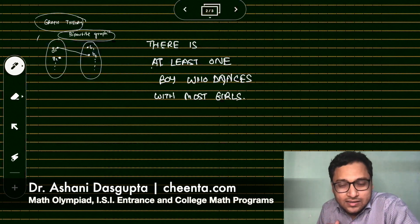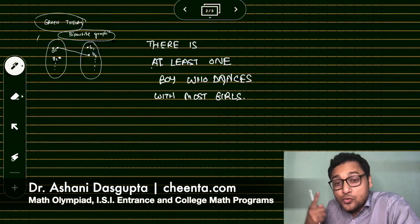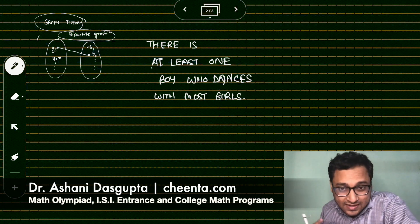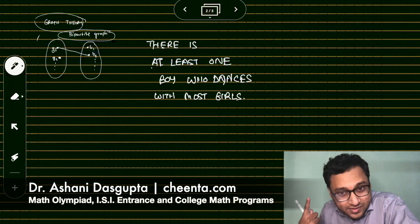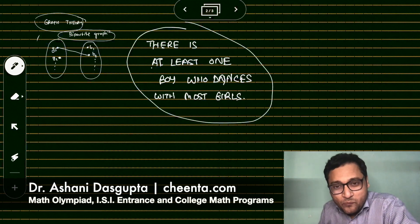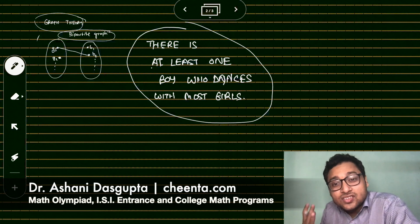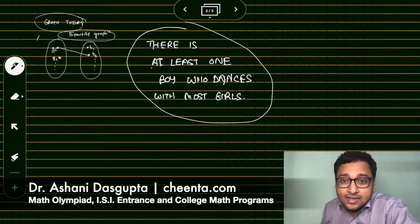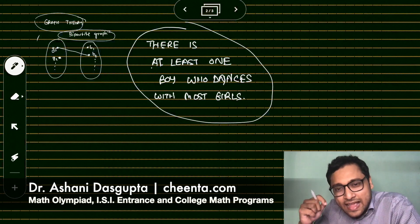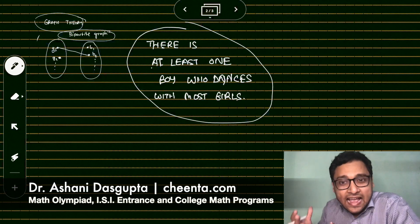So if there are 20 girls, there will be at least one person, one boy who would have danced with the largest number of girls. There could be more than one person like that, but there is at least one person like that. So see, we have taken the extreme scenario, the extreme case. That's really how extremal principle applications work. It's not a formula. It's a heuristic. It's a problem solving strategy.